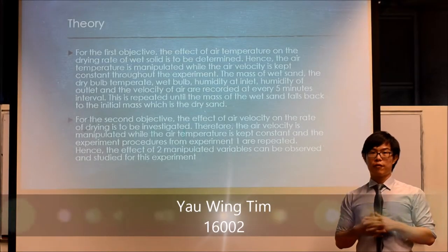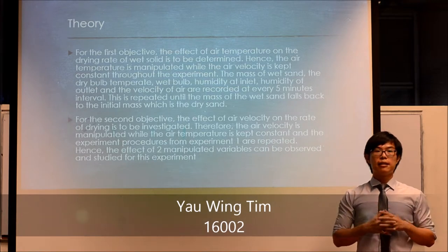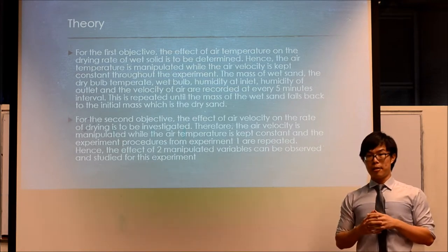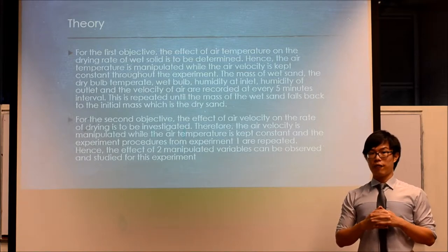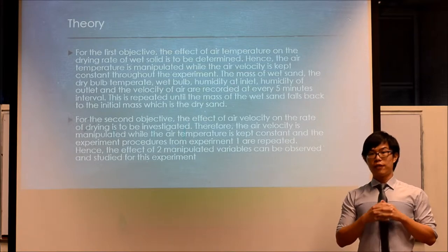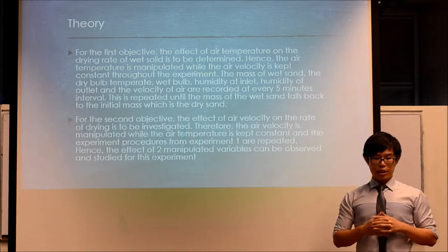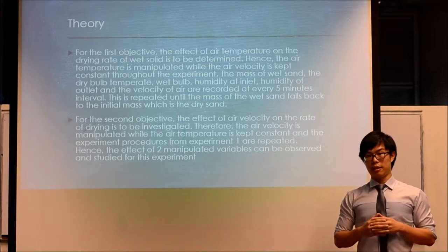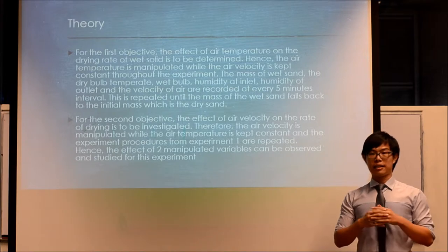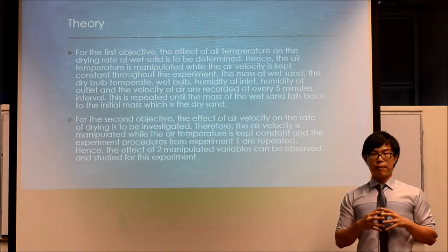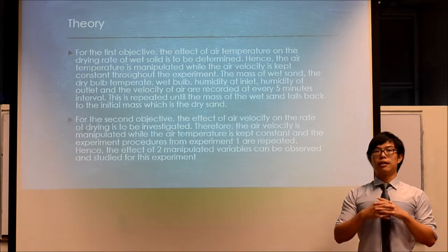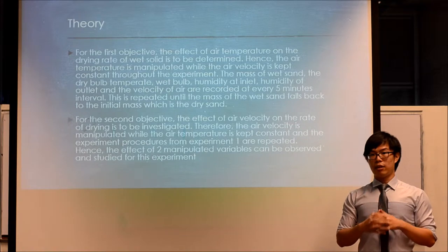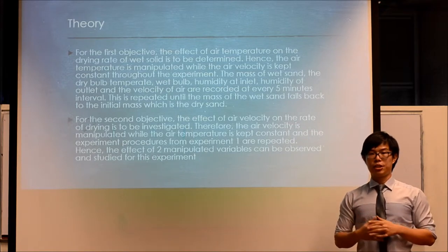Moving on to the theory of this experiment. There are two parameters to be determined: the effect of air temperature on the rate of drying, and the effect of air velocity on the rate of drying. For the first experiment, air temperature is manipulated while air humidity is kept constant. For the second part, air velocity is manipulated while air temperature is controlled.